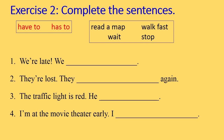And now, take your paper again. I have an exercise for you. Complete the sentences with 'have to' or 'has to' and these words. Example number one: We are late. We have to walk fast. You have two minutes to do it.